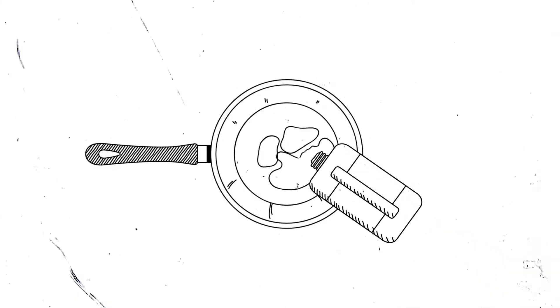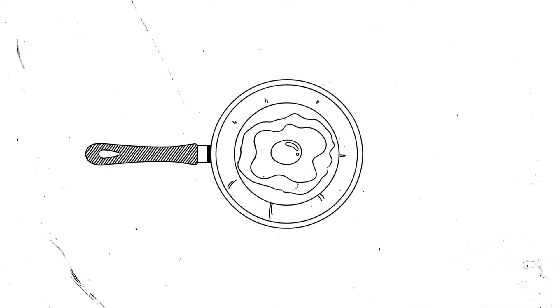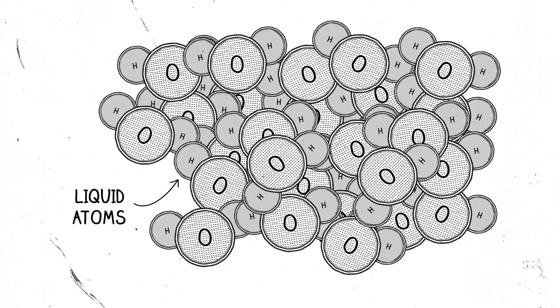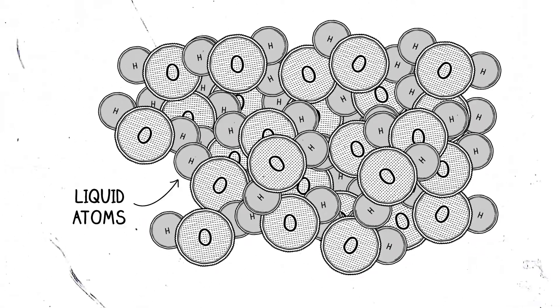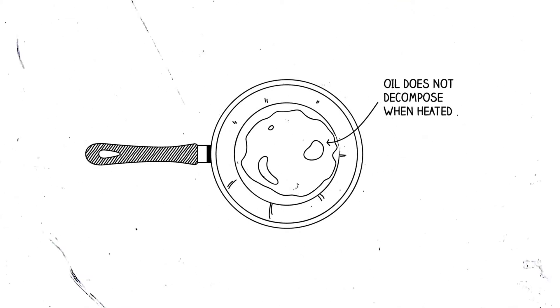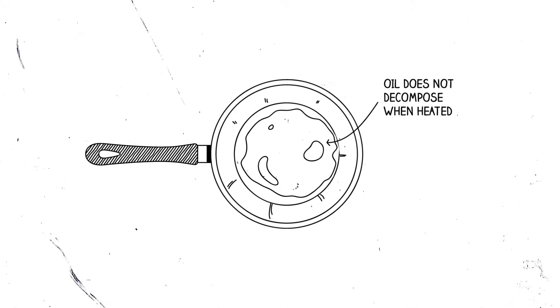Cooking oil is a liquid. It spreads out to cover the whole of the base of the frying pan. Cooking oil needs to be liquid, a good conductor of heat, and not break down when it's heated. The molecules in cooking oil are not linked together by bonds between the molecules, so they spread out in the pan. But the atoms in the cooking oil molecules are strongly held together by chemical bonds inside the molecule, so the cooking oil does not decompose when heated.